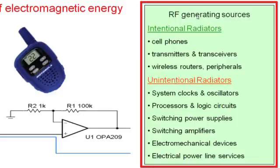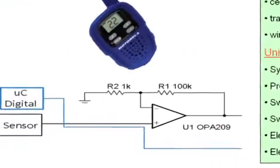Unintentional radiators often include system clocks, oscillators, processors, and logic circuits — especially those having fast rise and fall times — switching power supplies and amplifiers, electromechanical devices, and electrical power supply line services.